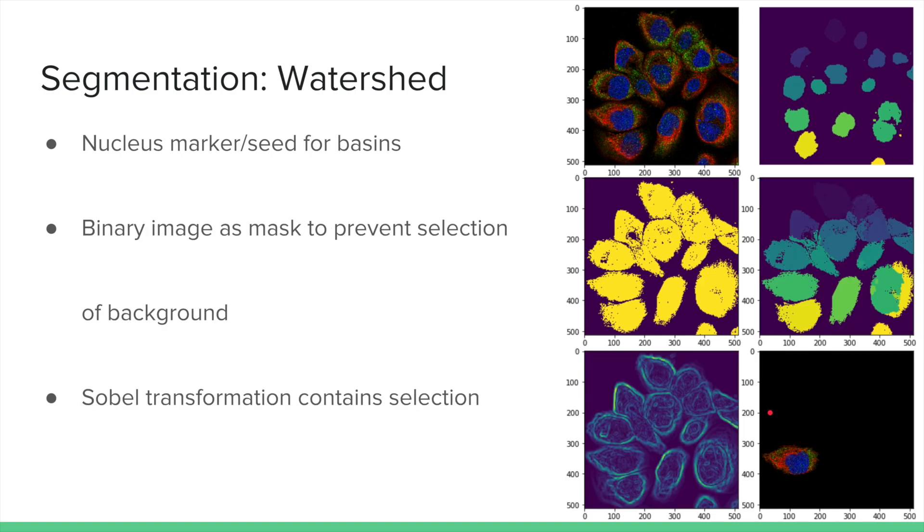Finally, our last method utilizes the watershed algorithm. Similarly as before, the nuclei and binary images are used to ensure the cells are distinct and limited to the foreground pixels. The Sobel transformation is used to contain the growing of each seed.